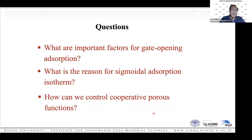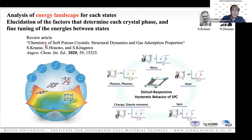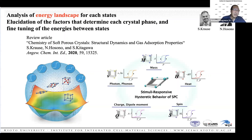Questions arise: first, what are the important factors for gate opening adsorption? Second, what is the reason for sigmoidal adsorption isotherms? Third, how can we control cooperative porous functions? Recently, this year, we published review articles with Krauss and Osono showing energy landscape discussions to understand and control the softness in gate opening sorption.